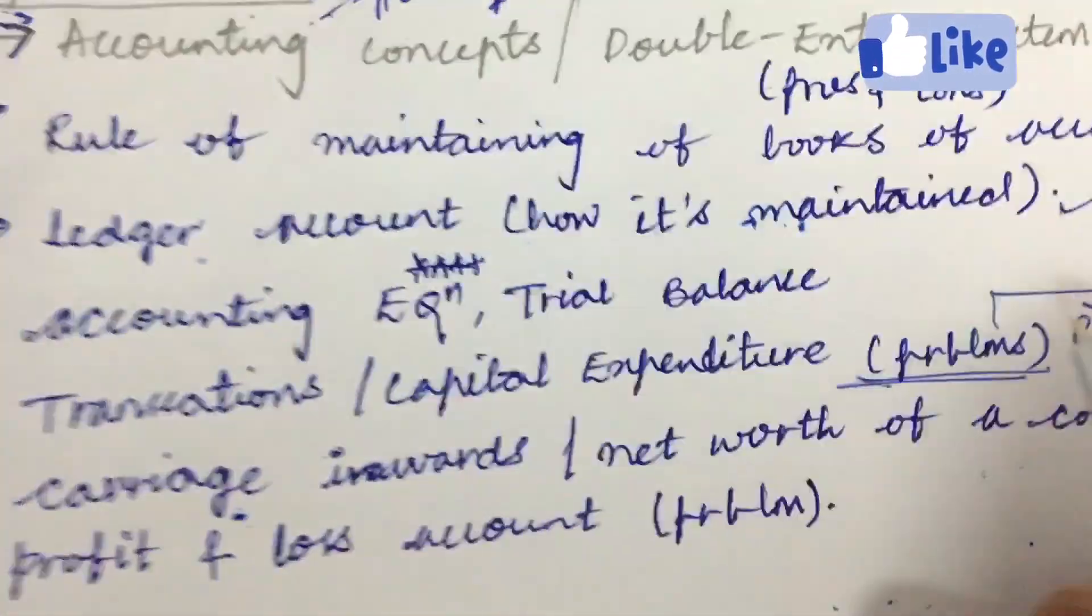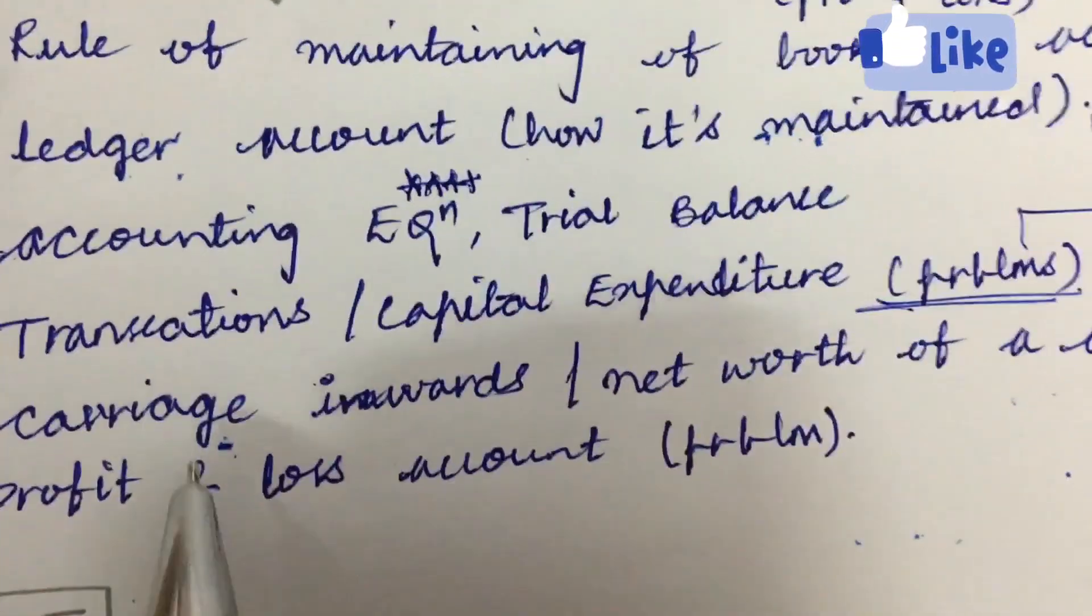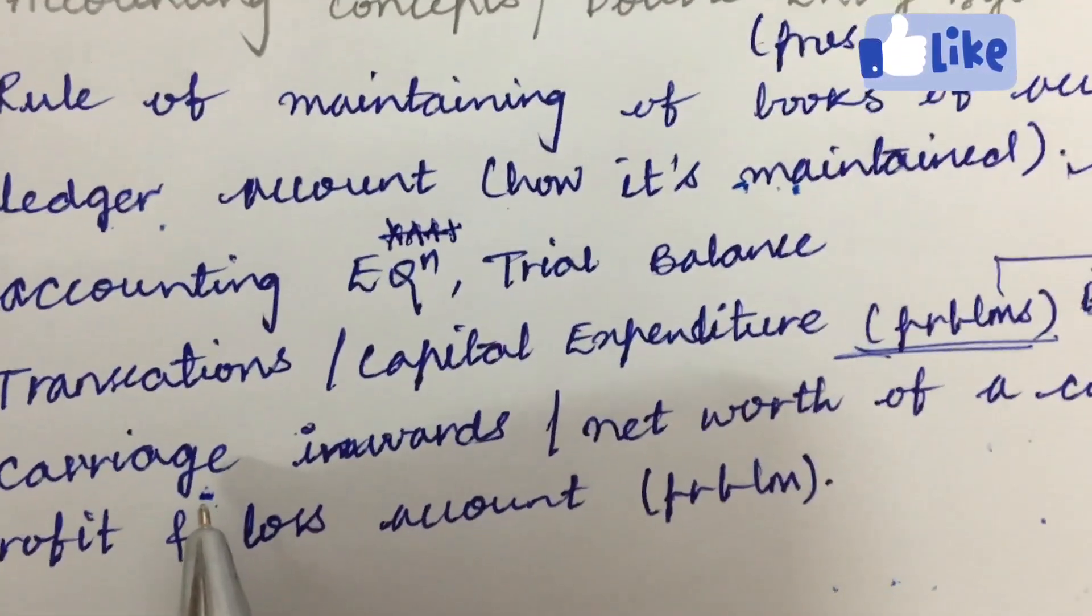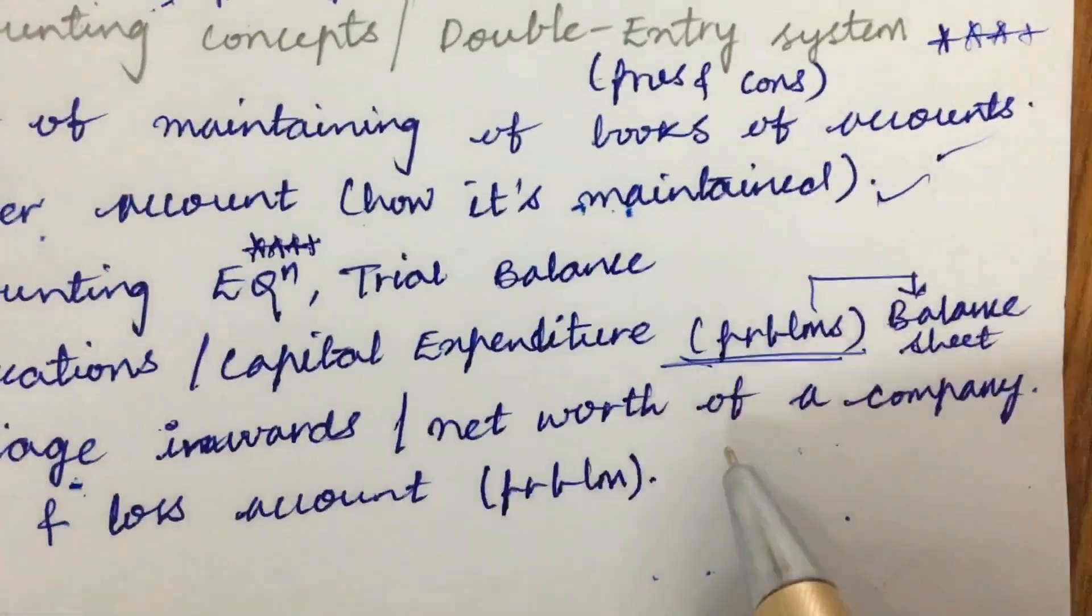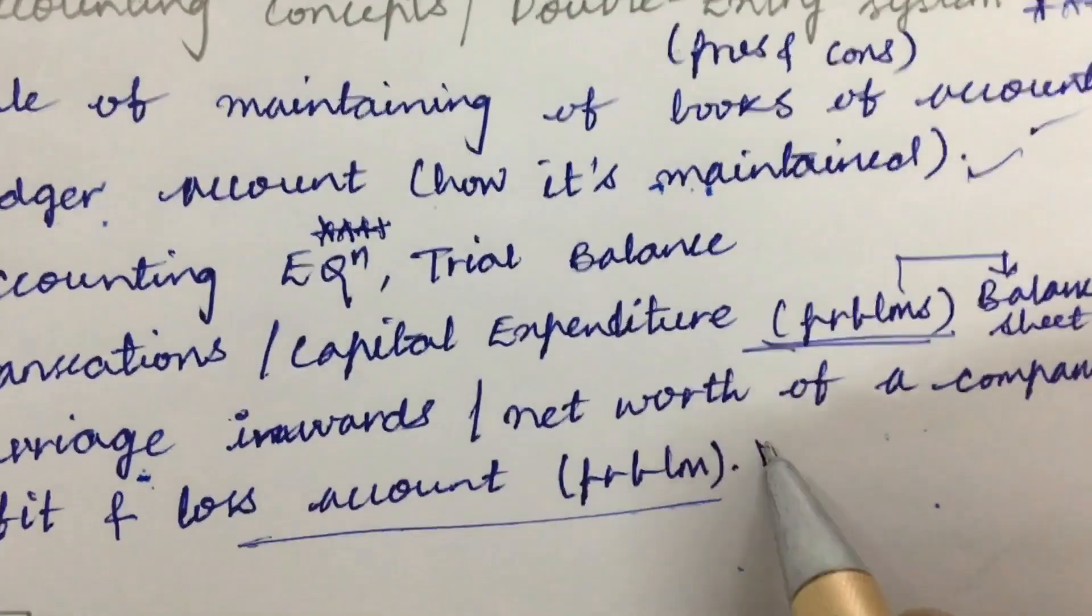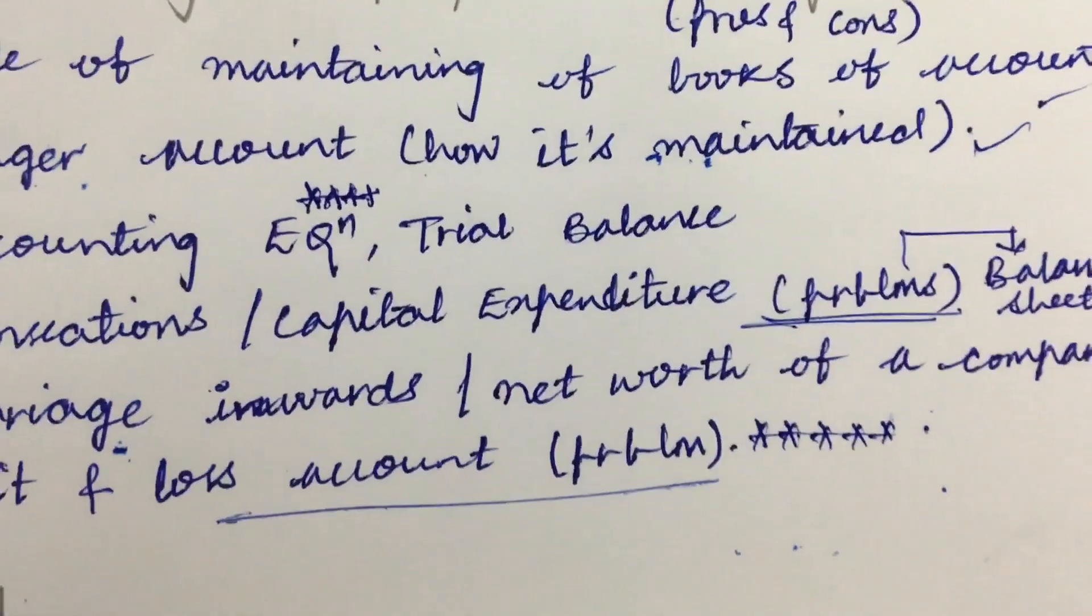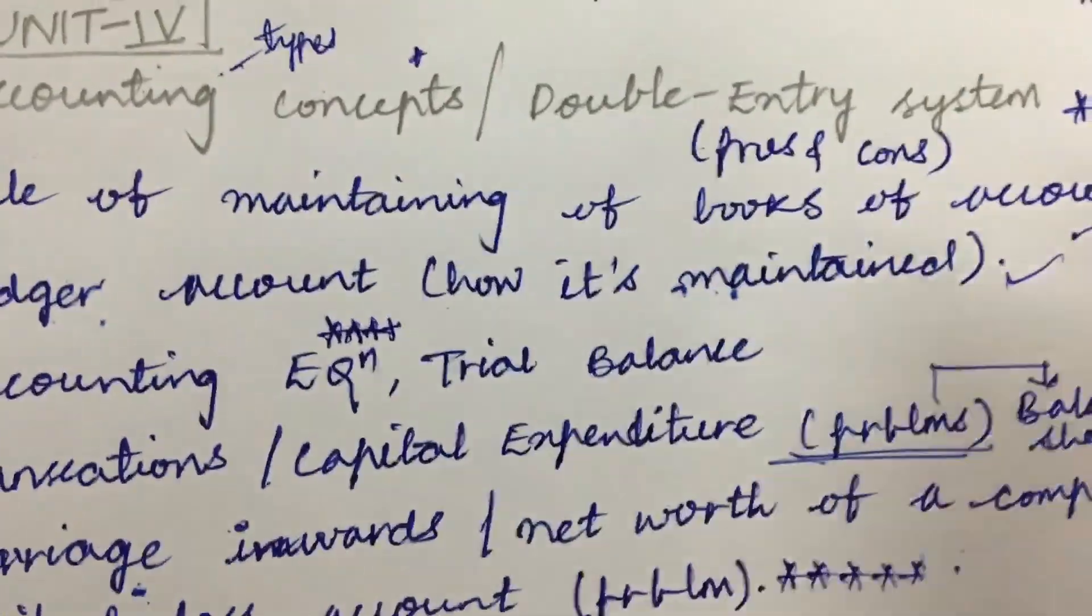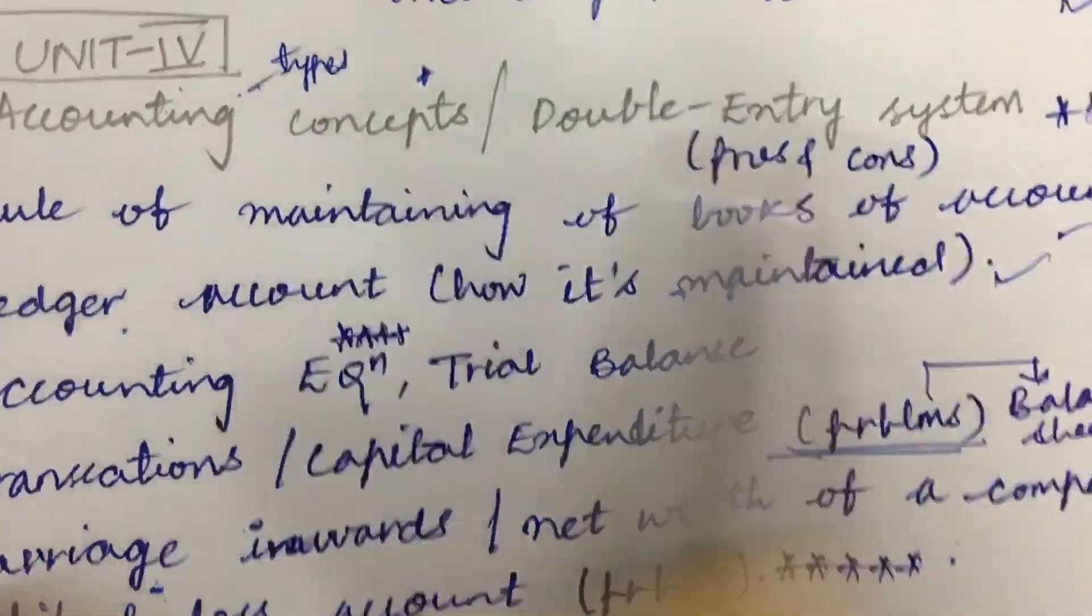Later, transactions, capital expenditure—based on the balance sheet they are going to ask the problem. These are all taken from earlier previous year question papers as well as the analysis done by me through going through the syllabus copy of JNTU. Carriage inwards, net worth of a company, and profit and loss account is one of the sure-shot questions—problems related to balance sheet and profit and loss account of certain companies. These are the highlighted questions I'm letting you know so you can prepare for your exam. The fifth unit is also about problems and is related to ratios.